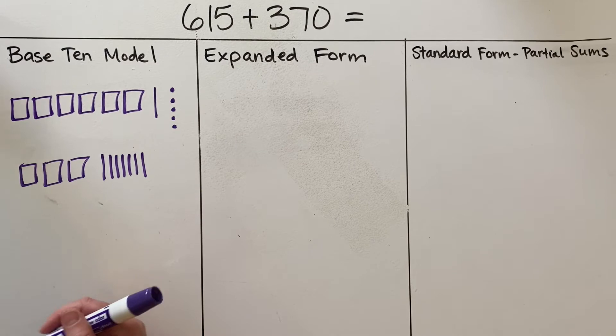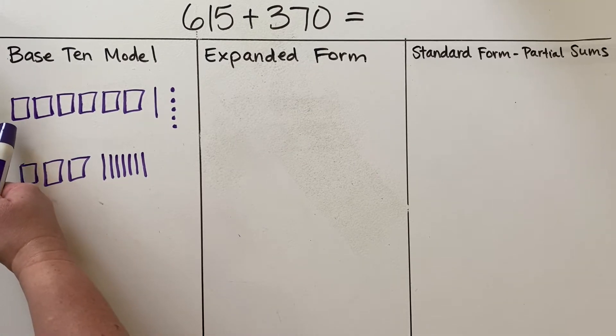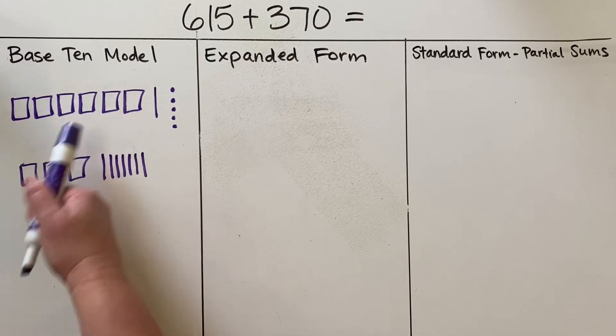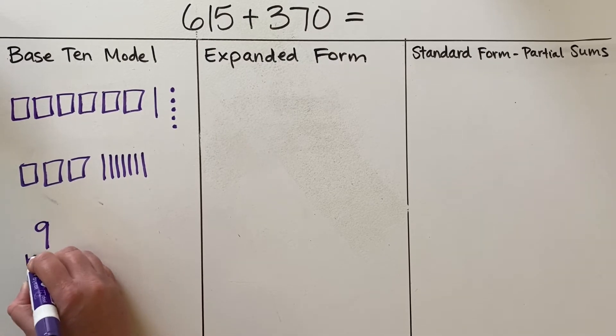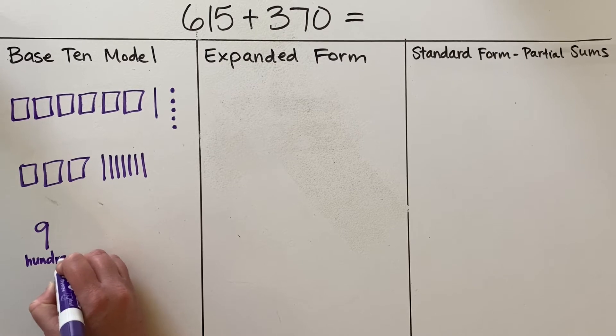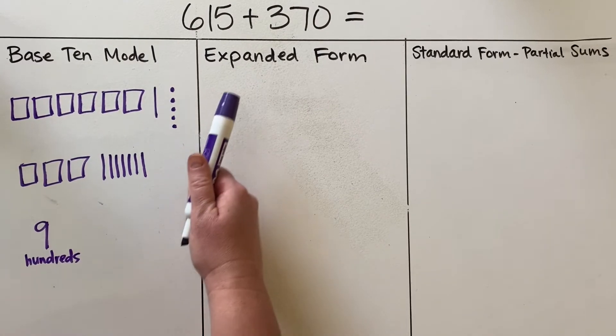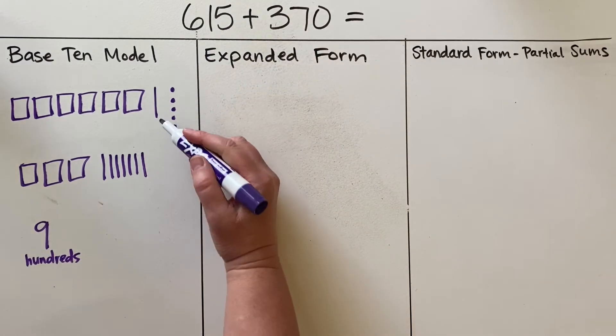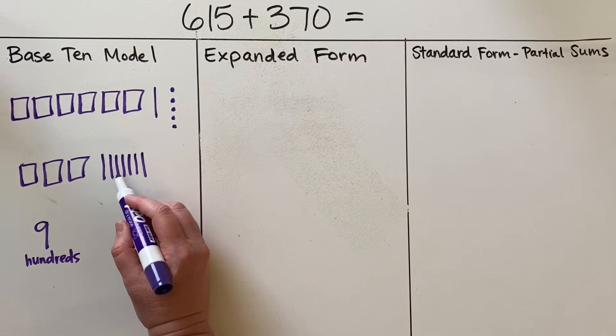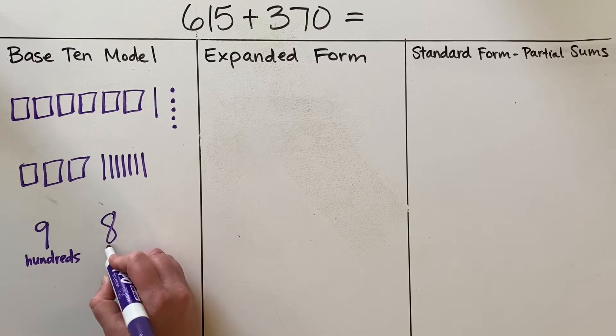Now I can go ahead and add up all of the parts that I have. So my hundreds, if I count that up, I have one, two, three, four, five, six, seven, eight, nine hundreds. The tens—the 10 and 70—we have one, two, three, four, five, six, seven, eight tens.